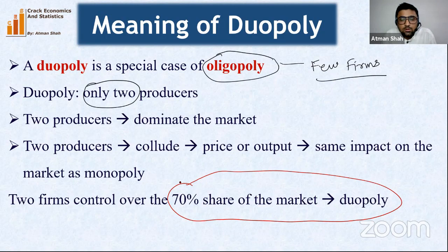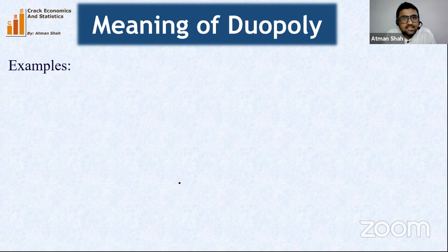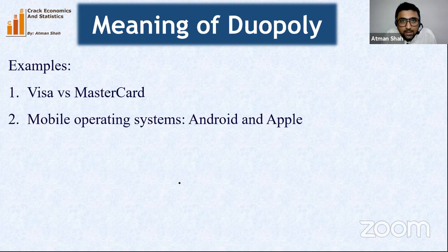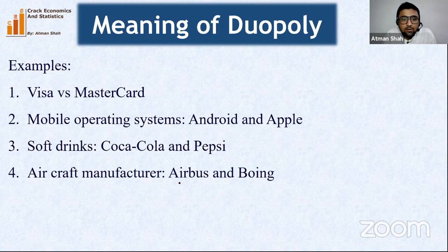Some examples of duopoly: Visa and Mastercard are the two dominant players in payment networks; mobile operating systems are dominated by Android and Apple; soft drinks by Coca-Cola and Pepsi; and aircraft manufacturers by Airbus and Boeing. These firms have a major market share in their respective markets.